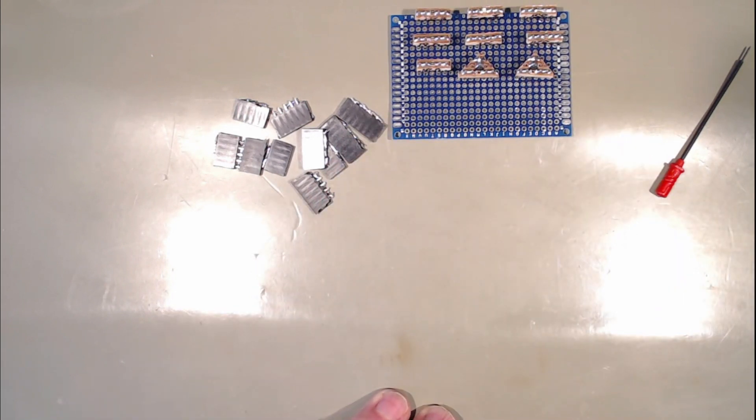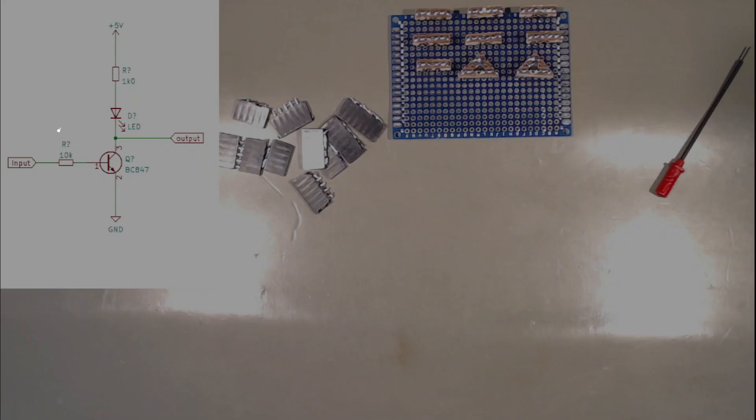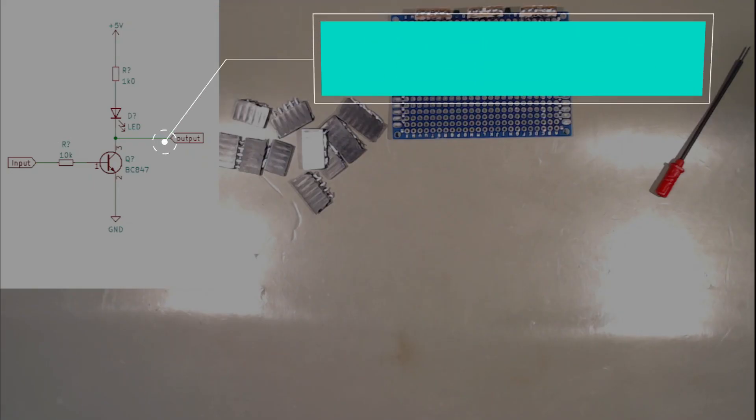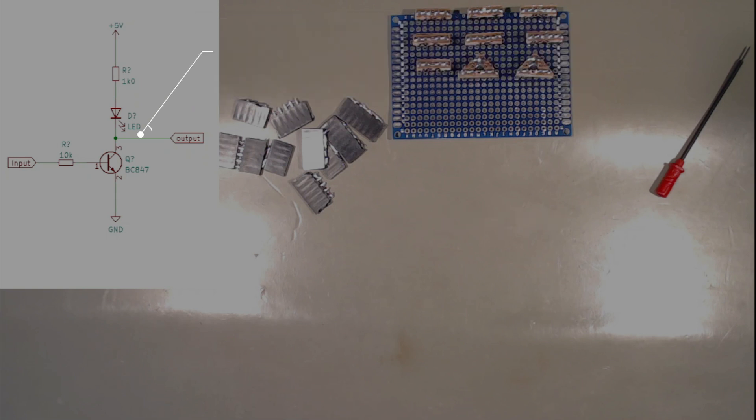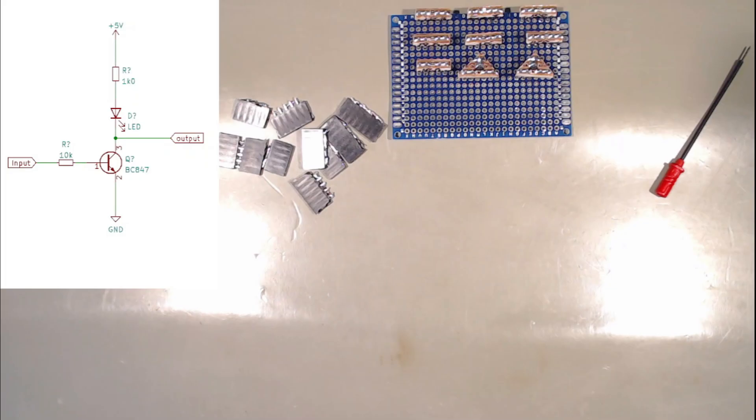I think we are going to do a buffer or you might say it's an inverter because a high on here will produce a low on there, and the low on here will produce a voltage somewhere between five and ground because of the LED.